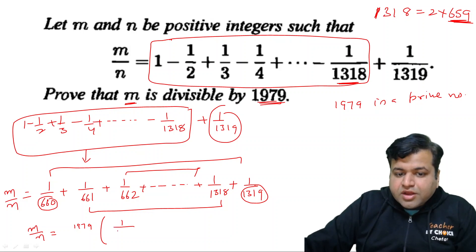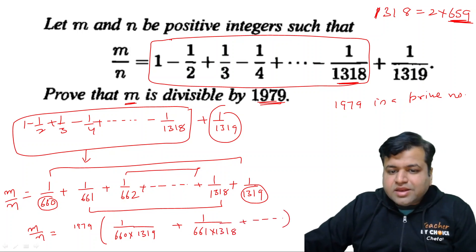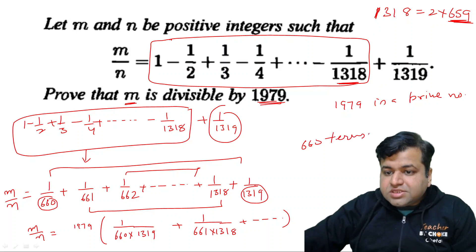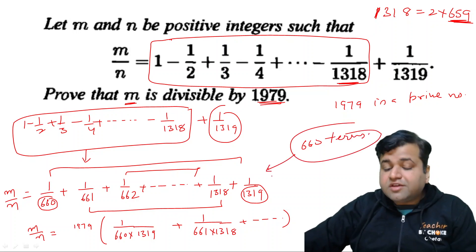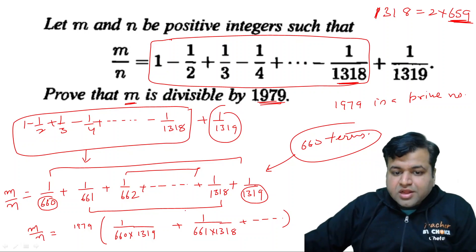And what will be the something? 1 upon 660 into 1319 plus 1 upon 661 into 1318 plus and so on. And clearly, we can pair them up because these are even number of terms. These are, I guess, these are 660 terms. Since these are 660 terms, which are even in number, so we can pair them all.